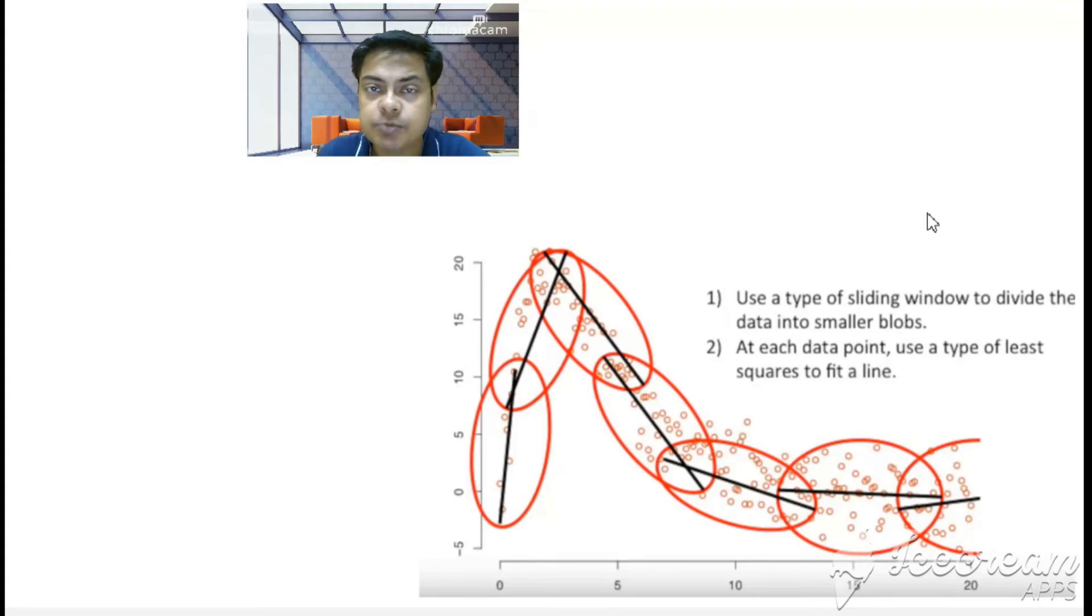There's a kind of sliding window to divide the data into smaller blobs or patches, and at each data point use a type of least squares to fit the line.